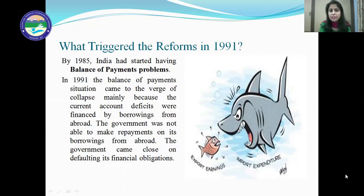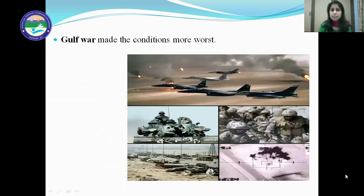In 1991, the balance of payment situation came to the verge of collapse, mainly because the current account deficits were financed by borrowings from abroad, and the government was not able to make repayment on its borrowings. India was in such a situation that its government was very close to defaulting on its financial obligations. The Gulf War happened in 1991, which made the situation worse — America attacked Iraq, and Iraq was the exporter of petroleum products to India, and increased the prices of petrol, putting more financial burden on the Indian economy.